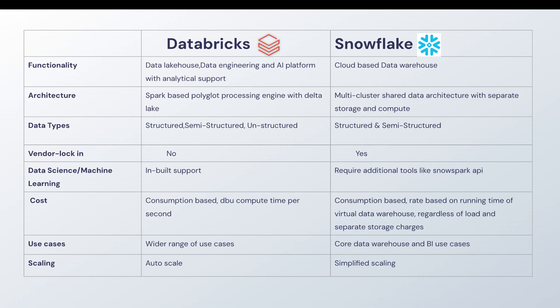With Databricks, you do not have vendor lock-in, whereas with Snowflake you are locked in by the vendor. Another major feature of Databricks is its built-in support for data science and machine learning. Snowflake, being a data warehouse, requires additional tools like the Snowpark API whenever you need to do any machine learning processing. Databricks was specifically started for machine learning workloads, while Snowflake requires third-party tools like Snowpark for data science or ML work.